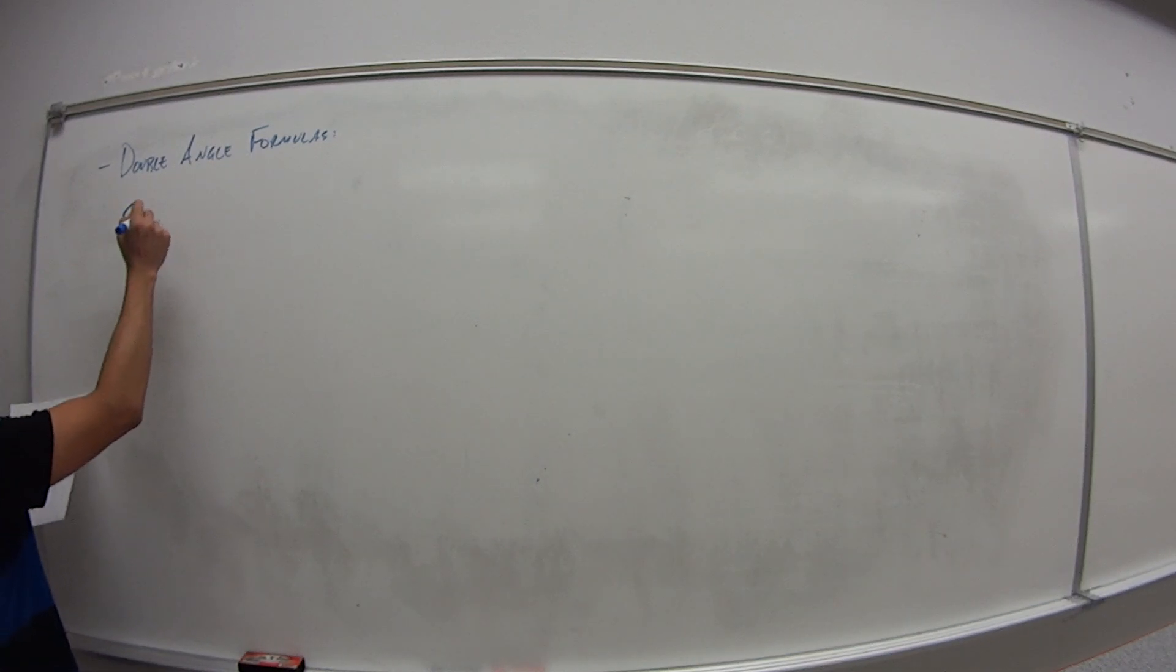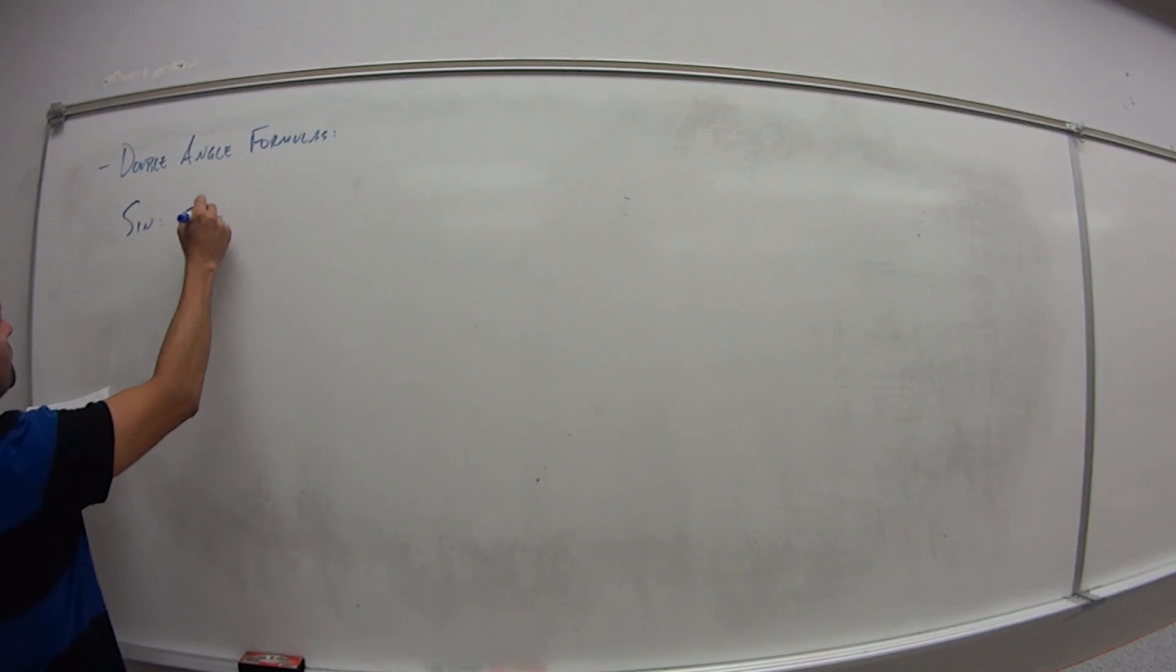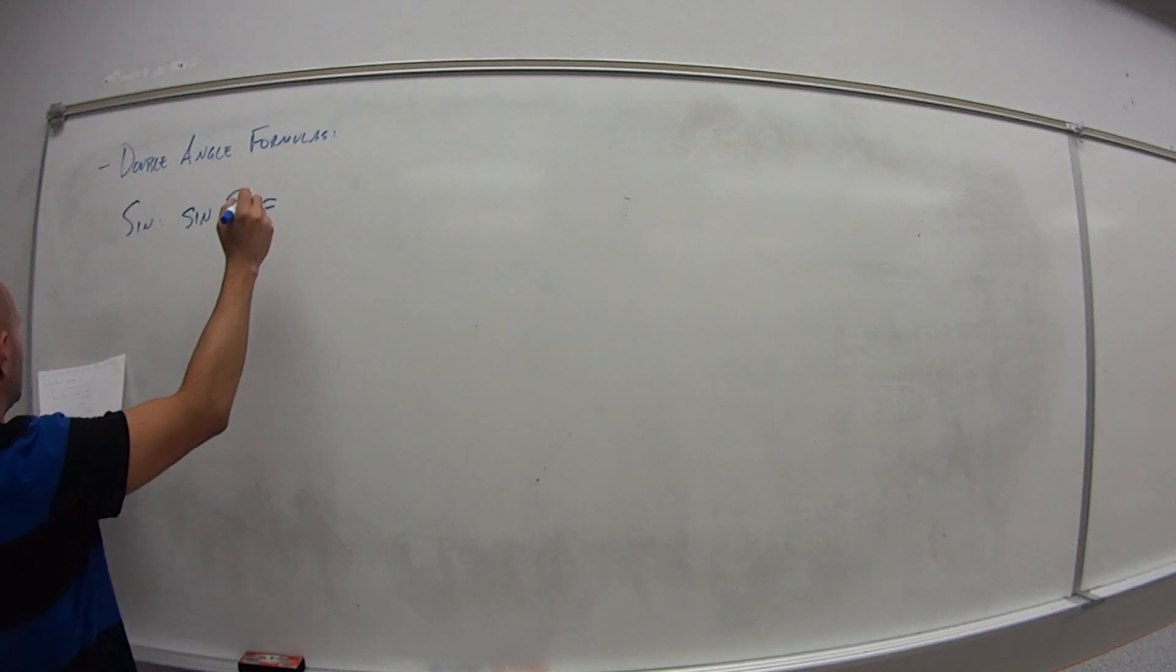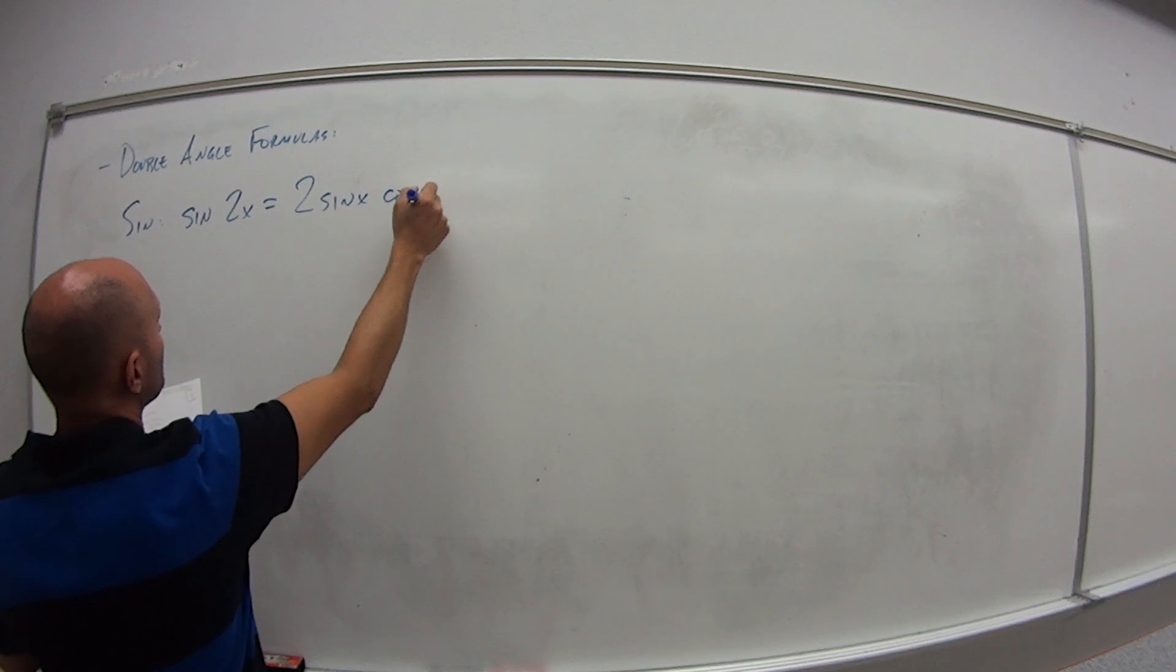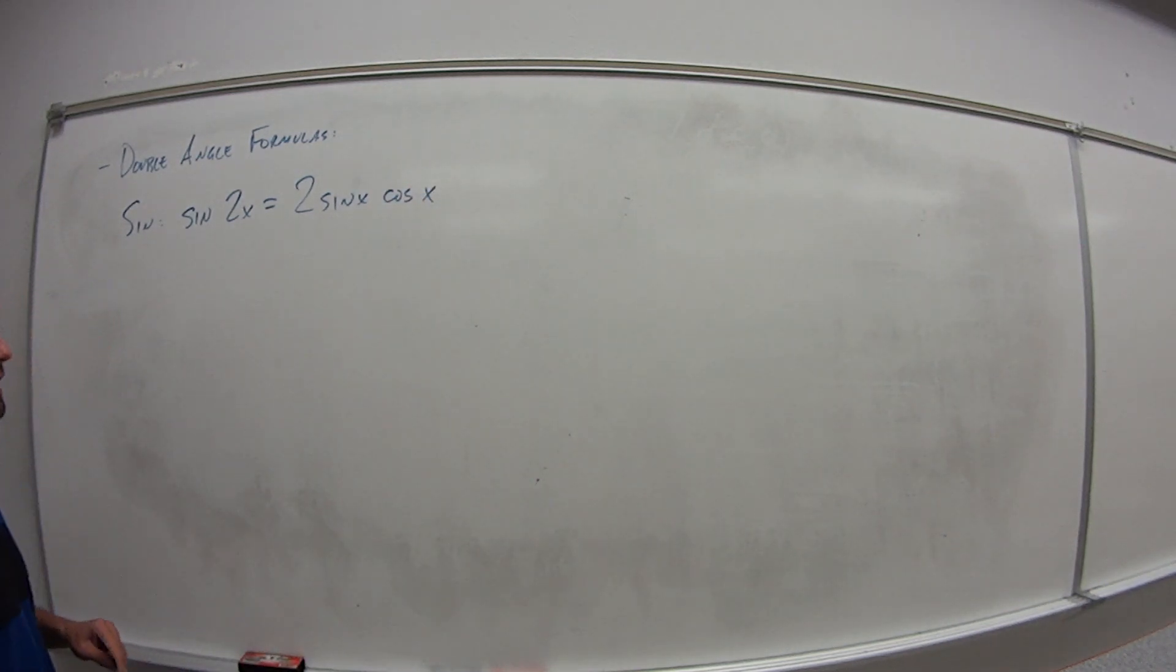First off for double angles, for sine: sine of 2x is equal to 2 times sine of x times cosine of x. That one's not too bad.